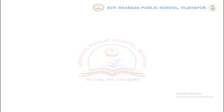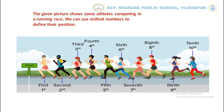Children, look at the image. The given picture shows some athletes competing in a running race. We can use Ordinal Numbers to identify their position: 1st, 2nd, 3rd, 4th, 5th, 6th, 7th, 8th, 9th, 10th.